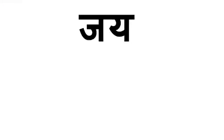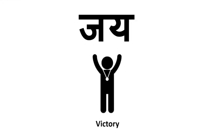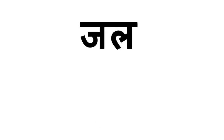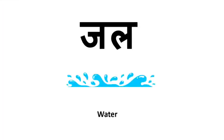What does J mean? Look at this — J means victory. The next word is Jal. What does Jal mean? Jal means water.